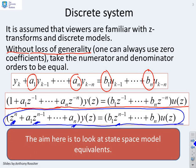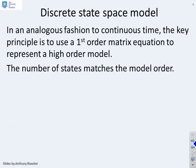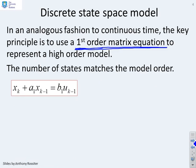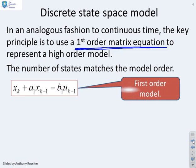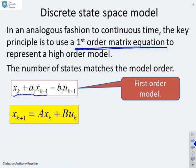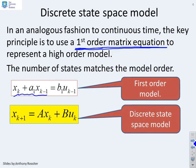Next we look at state-space equivalence for this difference equation. In analogous fashion to continuous time, the key principle is to generate a first-order matrix equation — that is what a state-space model is. It looks like a first-order equation except the coefficients are matrices. The discrete state-space model takes the form x(k+1) = A·x(k) + B·u(k), and this is the form we are looking for.